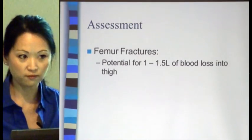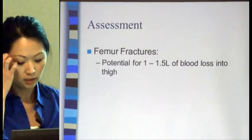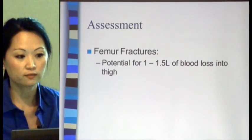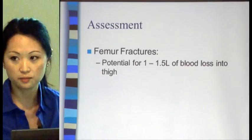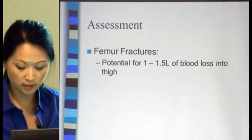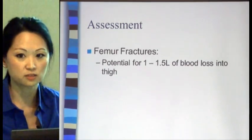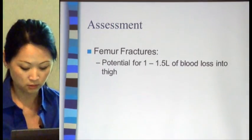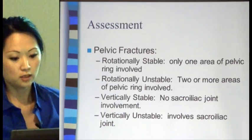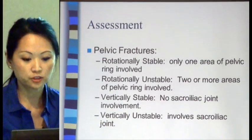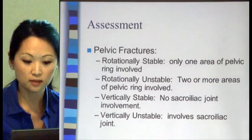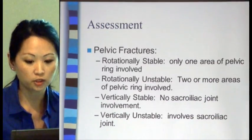With a femur fracture, in addition to the five P's, you also want to check for hemodynamic instability. There can be up to one and a half liters of blood loss just from a femur fracture alone. Then pelvic fractures — these can be either stable or unstable based on where the injury occurs.